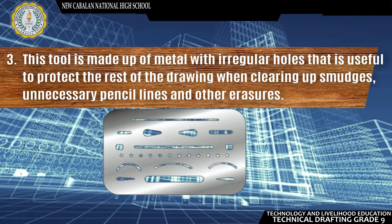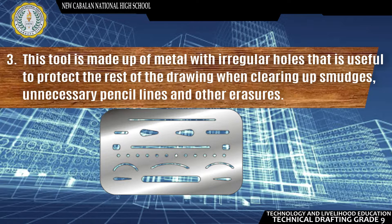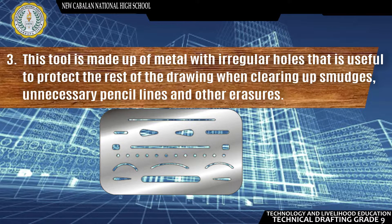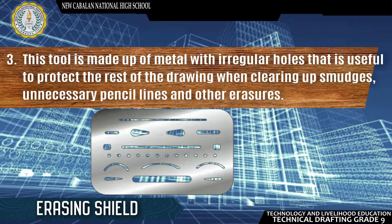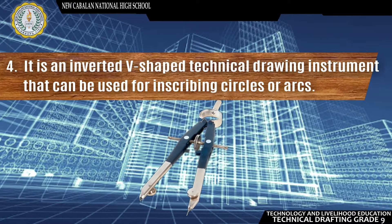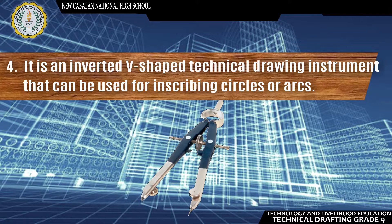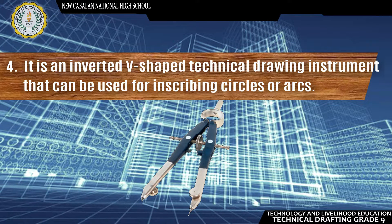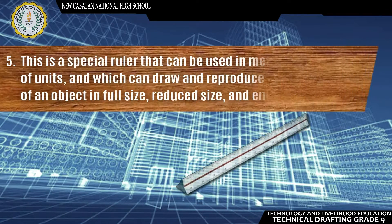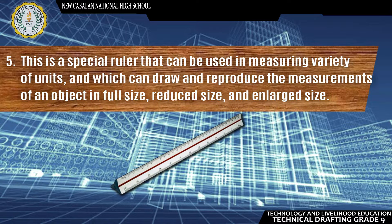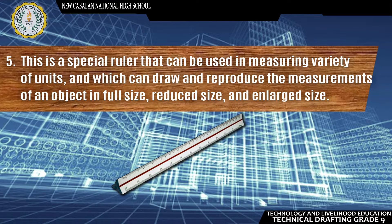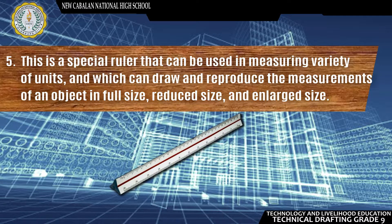Number 3: This tool is made up of metal with irregular holes, useful to protect the rest of the drawing when clearing up smudges, unnecessary pencil lines, and other erasures. The correct name is Erasing Shield. Number 4: It is an inverted V-shaped technical drawing instrument that can be used for inscribing circles or arcs. The correct name is Compass. Number 5: This is a special ruler used in measuring a variety of units to draw and reproduce measurements of an object in full size, reduced size, and large size. The correct name is Triangular Scale.